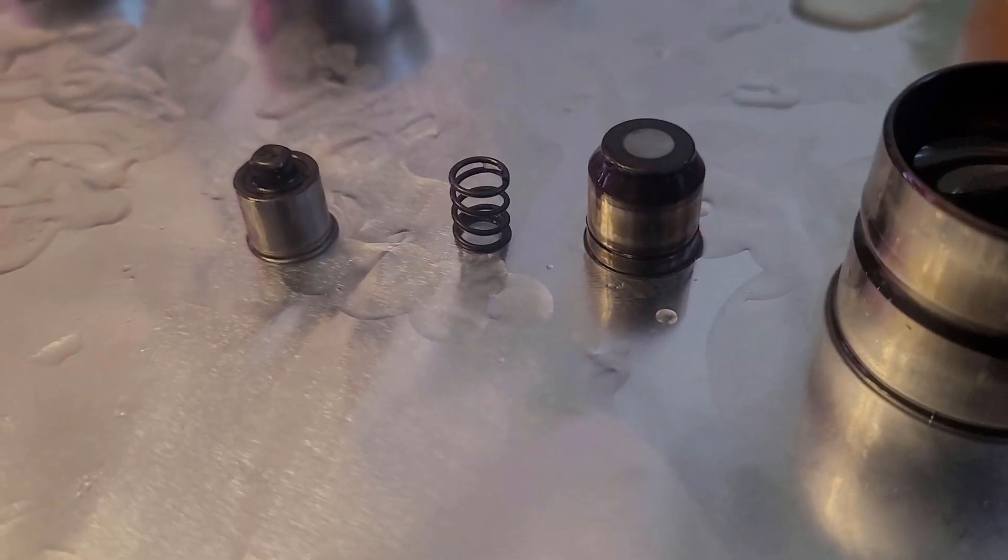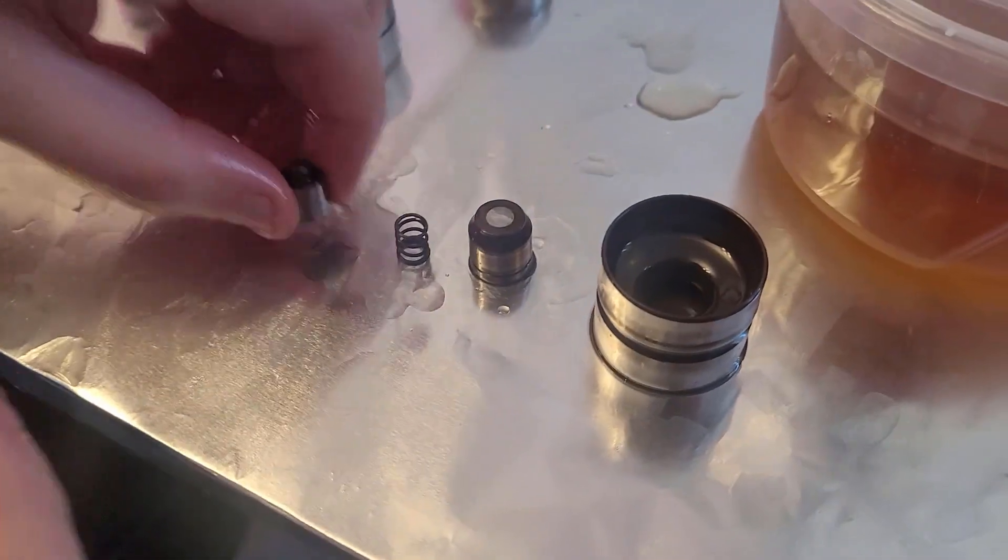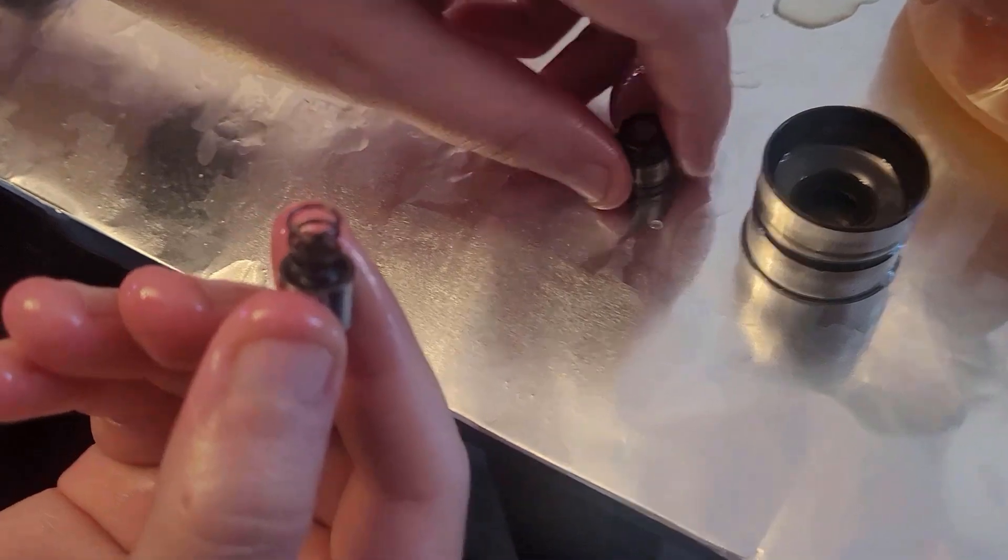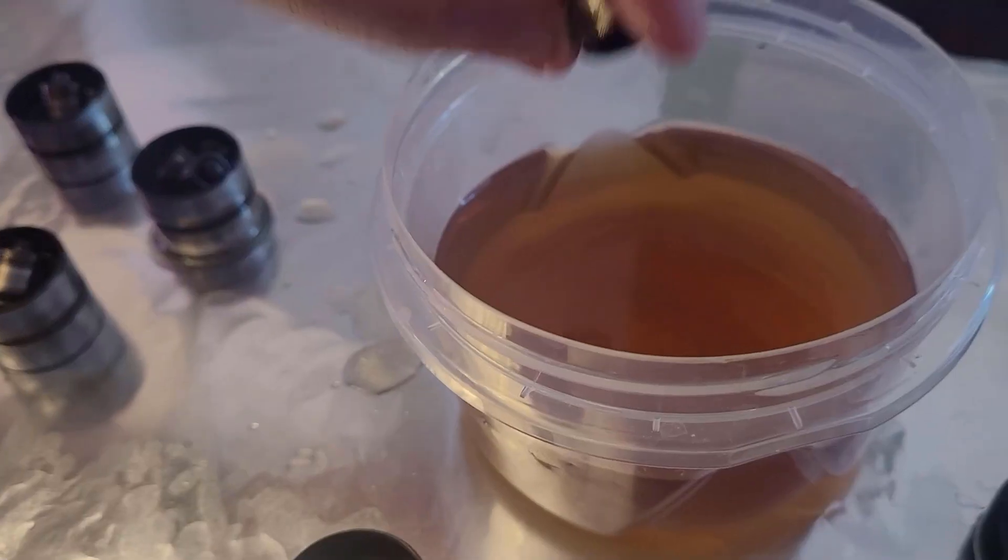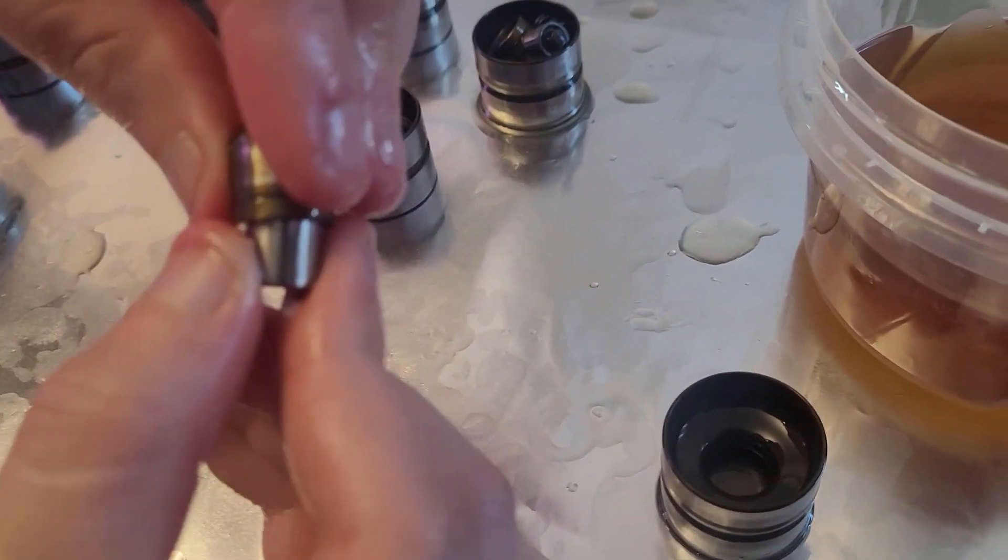Now we're going to show you the correct way to assemble this. You're going to take the cylinder with the nipple, take this spring, and put it around the nipple like a little piece of jewelry. Then we're going to dunk this cylinder in oil so it's lubed up.